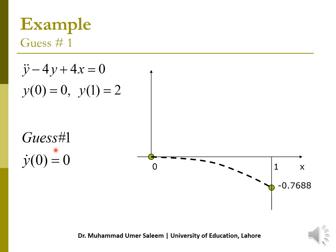I take the first guess — this is a raw guess, we can take any value. I take y'(0) = 0 as the first guess. So the conditions are y(0) = 0 and y'(0) = 0. Starting from this point, this equation together with this condition and this guess makes it an initial value problem. Solving this IVP to find y at 1, using the second order RK method, gives y(1) ≈ −0.768.